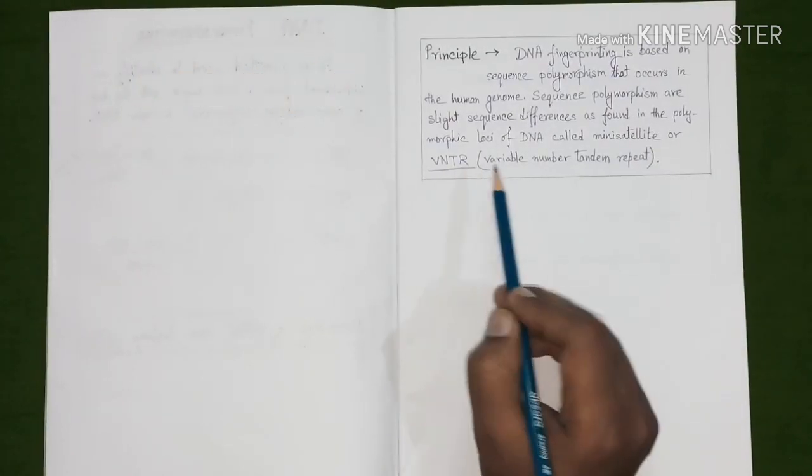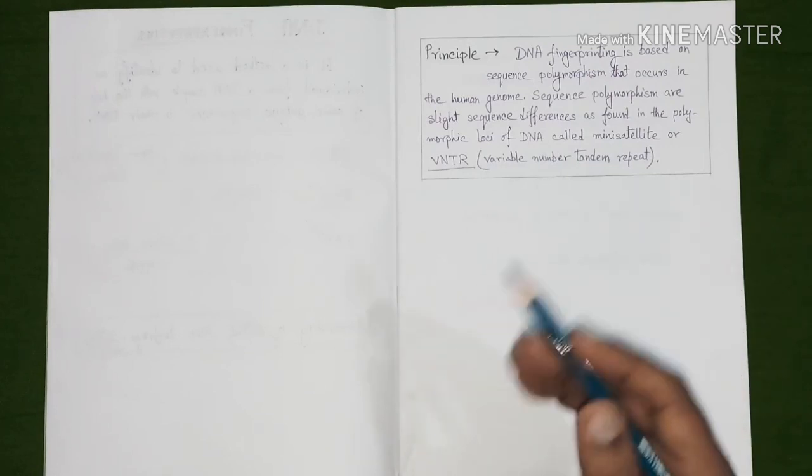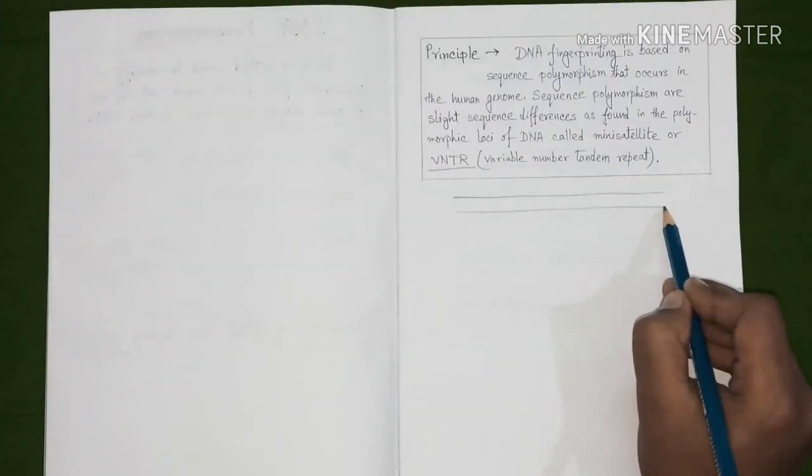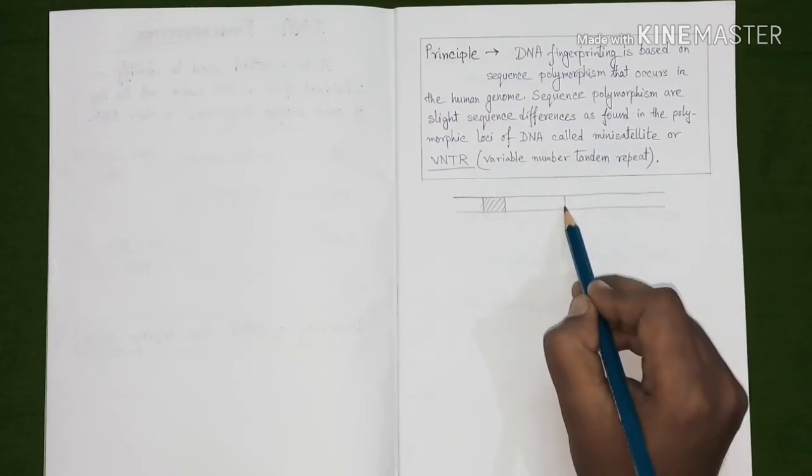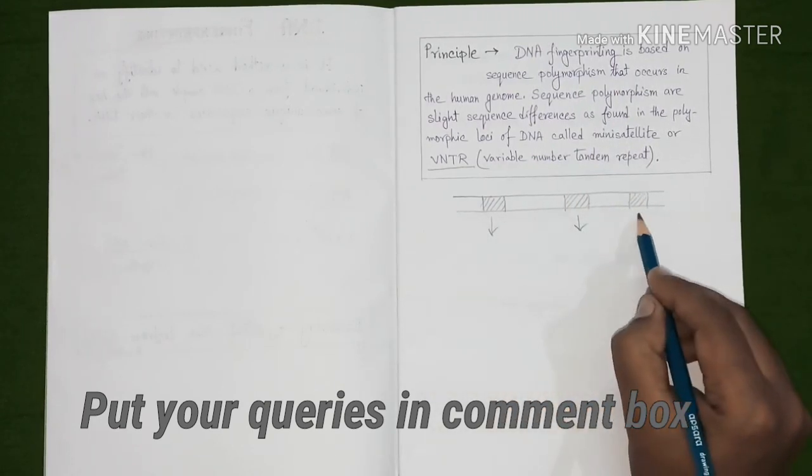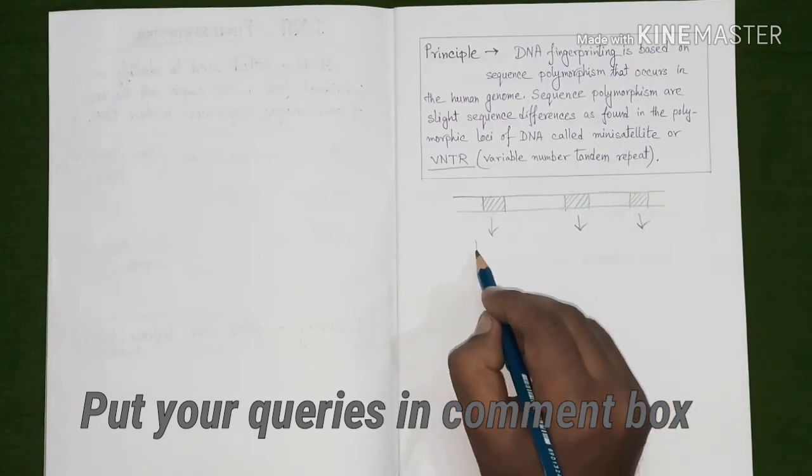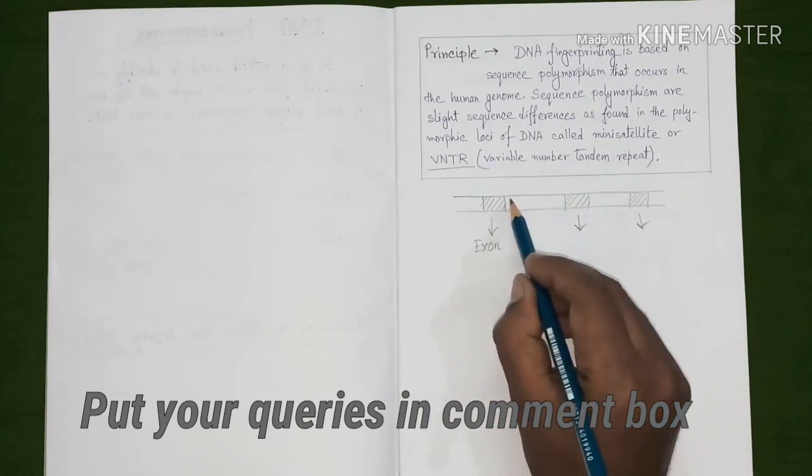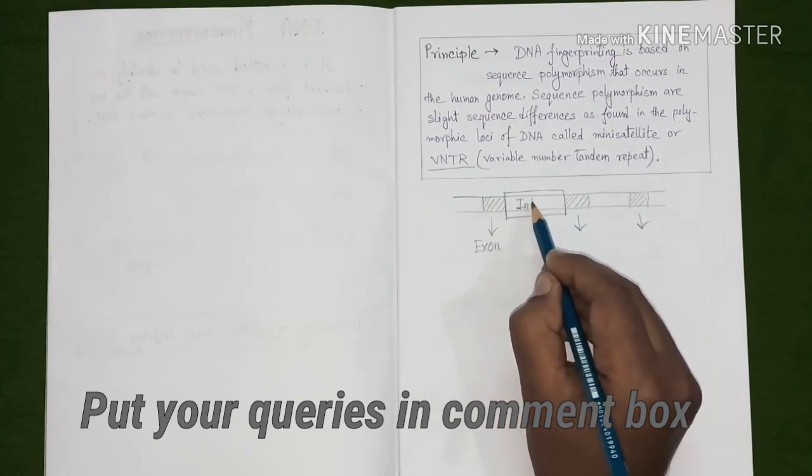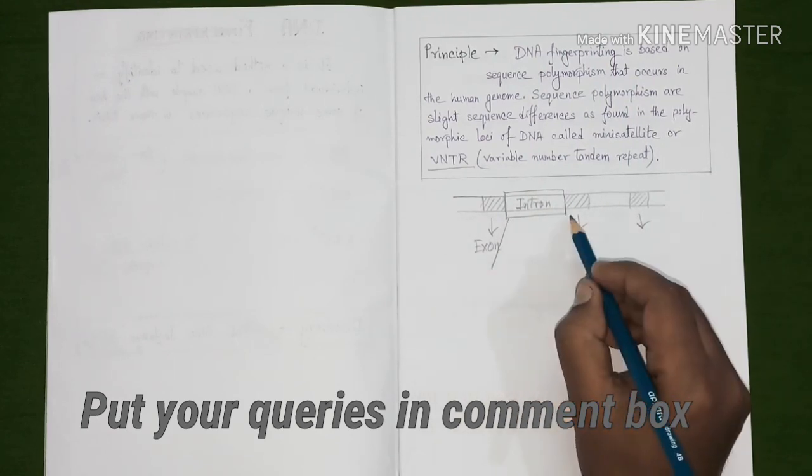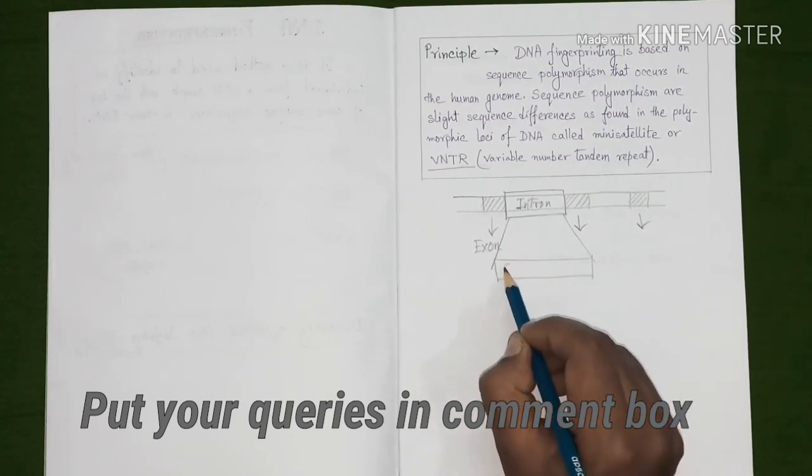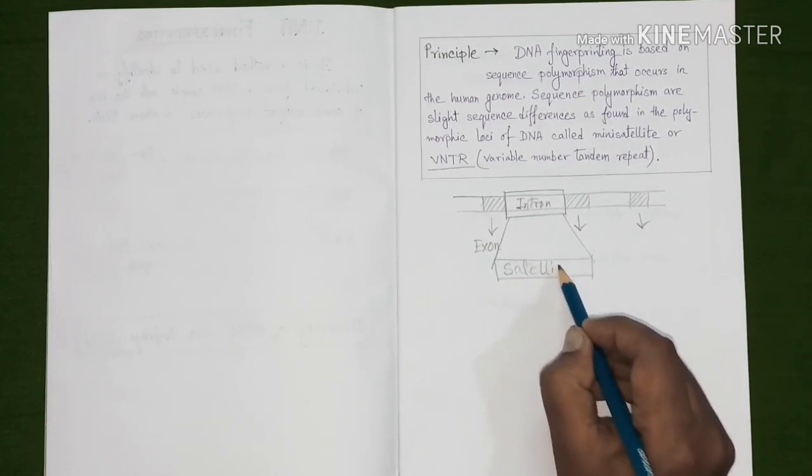For the purpose to understand VNTR, we have to stretch our idea on some known things. We all know that on the entire length of DNA, there are only some portions that are able to produce functional proteins. These portions that produce functional proteins are known as exons. And in between them, there are some stretches of DNA that are non-functional in respect of protein production. They are termed as introns. It is that intron which is also known as satellite DNA.